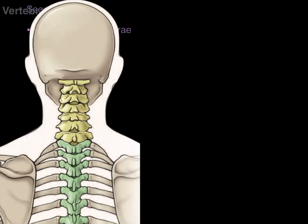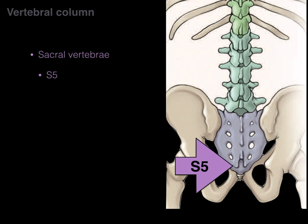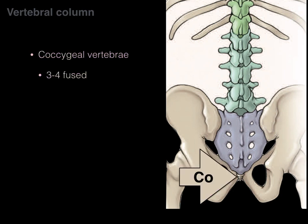Then we find the sacrum. The sacral vertebrae — there are five of them, but they're fused: S1 through S5. You can still see each individual segmental sacral vertebra, but they're fused together to make one bone. Finally, at the bottom, the coccygeal vertebrae make the tailbone, with three to four fused vertebrae.